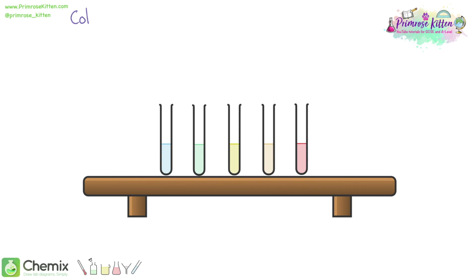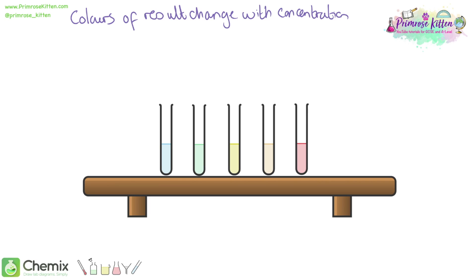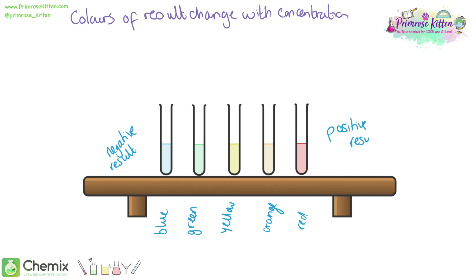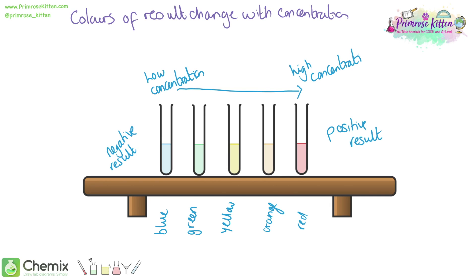You saw in the reaction that it didn't just snap change colour straight away — there were a range of colours, starting from blue all the way through to the brick red. The colours of the result change with the concentration of the reducing sugars. Blue with no colour change is a negative result, and brick red is our positive result. Everything in between is also a positive result: a low concentration of reducing sugars gives a green or yellow colour, moving all the way through to orange and red with a high concentration.